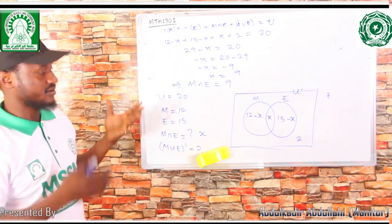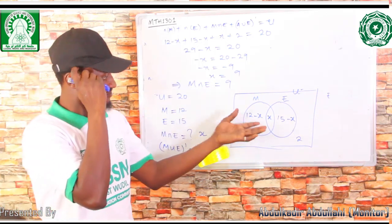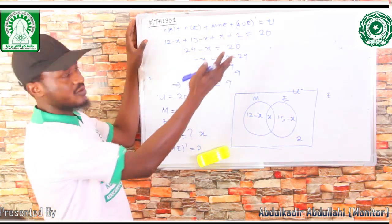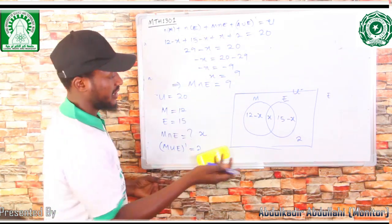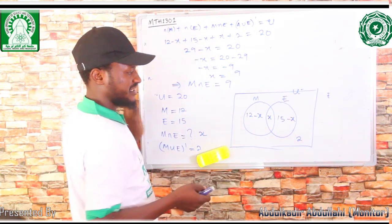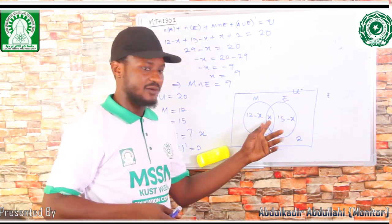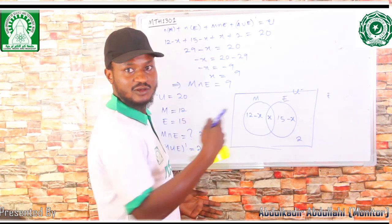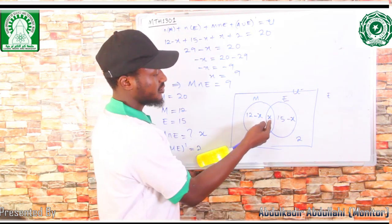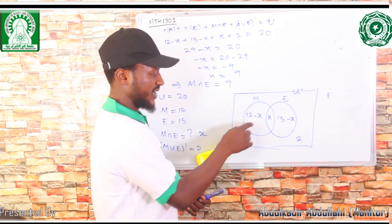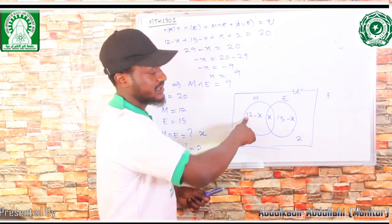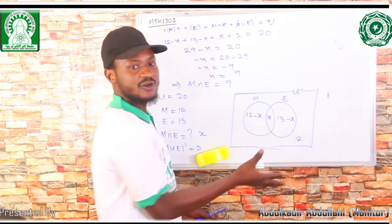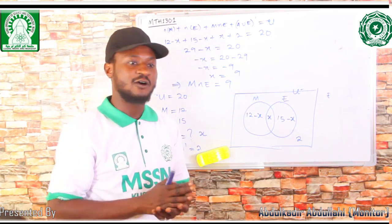This is how to solve such problems. For any missing value, use the formula above to find it. In some cases, X (the intersection) may be given — for instance, if X = 2, and we are asked to find those reading none of the subjects, substitute 2 into the regions (12 − 2 and 15 − 2), let the unknown be X, simplify, and find the value of X.